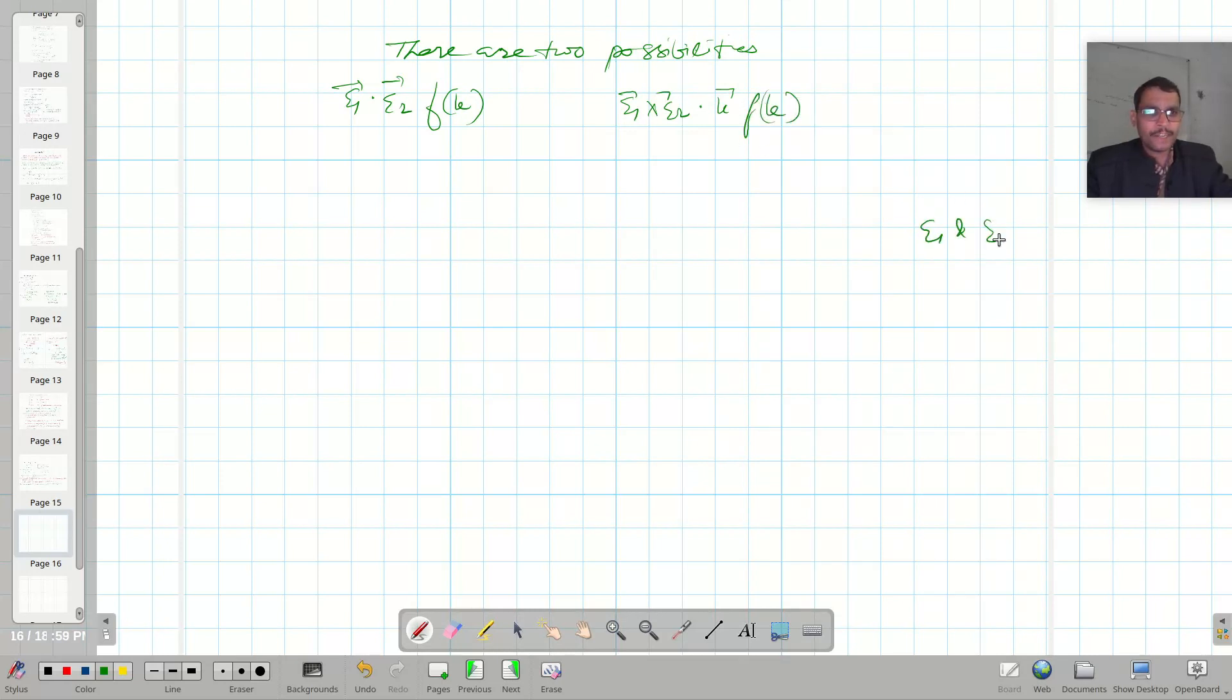Here epsilon 1 and epsilon 2 are the polarization vectors, and k1 equals k vector and k2 equals minus k vector. So this is for the one photon and this is for the second photon. In this case, direction of photon is not considered, so it can be omitted.